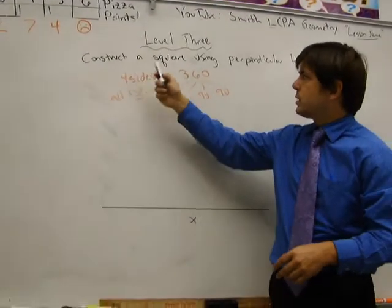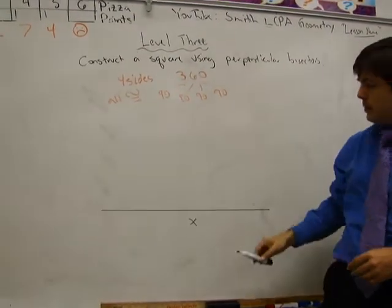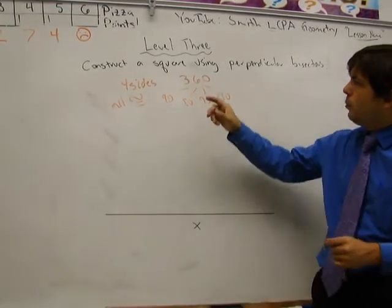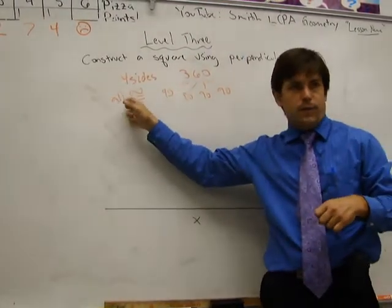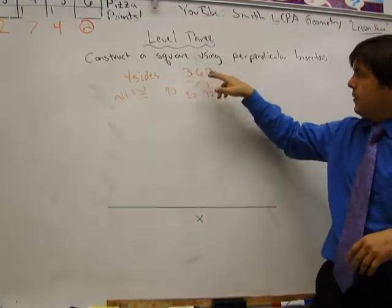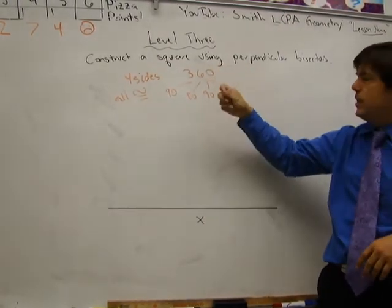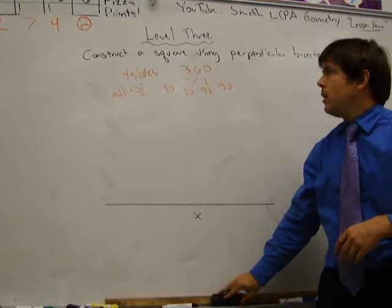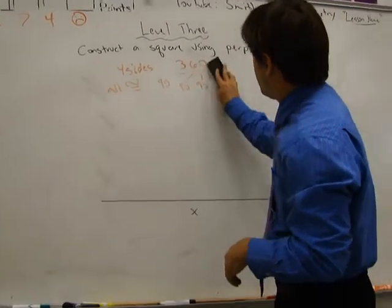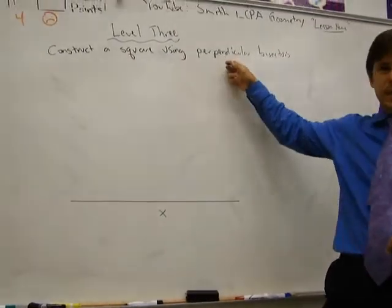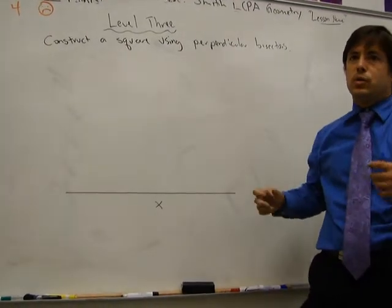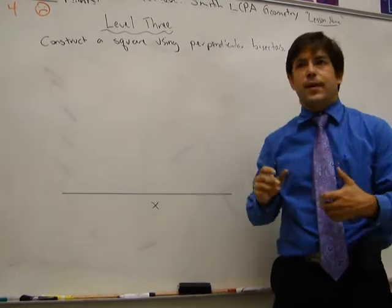Okay, we're going to do level three. We're going to construct a square using perpendicular bisectors. Just to review what a square is: it has four sides and all four sides are congruent. The interior angles will add up to 360 and each one will be 90 degrees. The reason a perpendicular bisector is useful in constructing a square is that it's perpendicular, it means it's 90 degrees. So it's a way to make a 90 degree angle without anything to measure it.